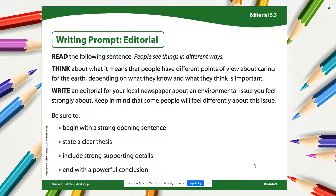You're going to write an editorial for your local newspaper about an environmental issue that you feel strongly about. Keep in mind that some people will feel differently about this issue than you will. You want to be sure to begin with a strong opening sentence, state a clear thesis, and also include strong supporting details. You will also end with a powerful conclusion.